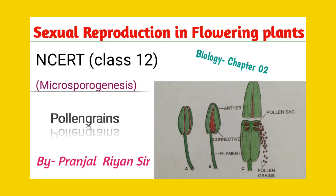Hello students, welcome to PRS Biology. Today I'll be talking about your second NCERT chapter for Class 12 Biology, that is sexual reproduction in flowering plants. This chapter covers the sexual reproduction process that occurs in flowering plants, that is the angiosperms. Before proceeding, note that the sexual reproduction process of flowering plants is completed in very sequential and complicated steps.